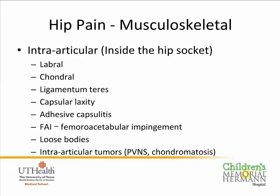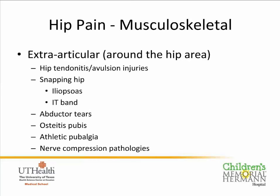Around the hip area, you can have tendonitis and avulsion injuries, which in younger patients can be more common and more benign. Snapping hip occurs when tendons are tight on the front or side of the hip and can cause discomfort or even debilitating pain. You can have muscle tears, bone irritation, and another entity called athletic pubalgia or sports hernia — an imbalance of muscles attaching to the pelvis — which particularly affects athletes. There are also some nerve compression pathologies that can be unusual reasons for hip pain.